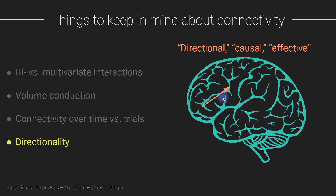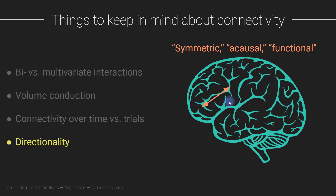Symmetric measures also tend to be easier to interpret because when working with causal or directional measures you have twice the number of sets of results to interpret — for every pair of electrodes you must consider the information exchange in both directions. This discussion is similar to the bivariate versus multivariate point: in the brain there is tons of directional causal flow happening, but in our analyses we tend to use symmetric or acausal measures. There are good reasons for that; it's not a confound or real limitation, but it is important to keep in mind that you cannot infer directionality when applying these non-causal measures.